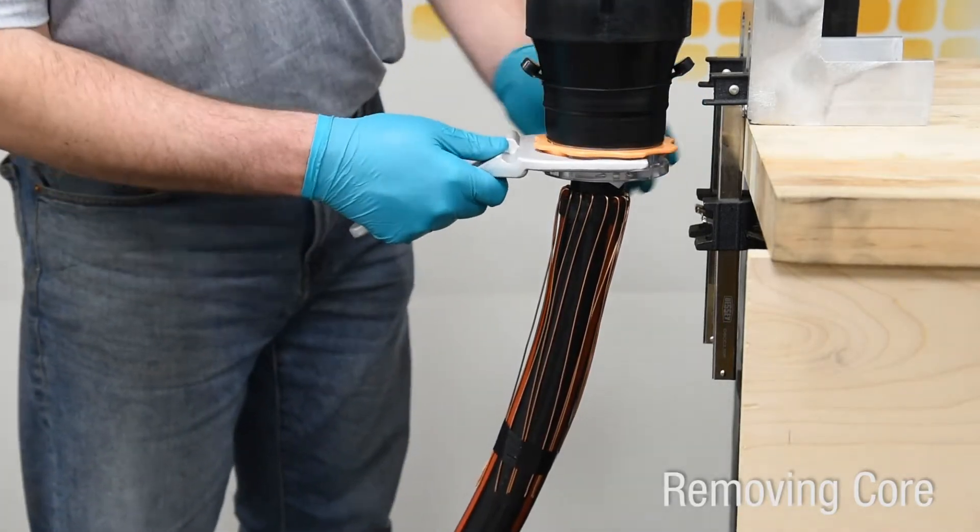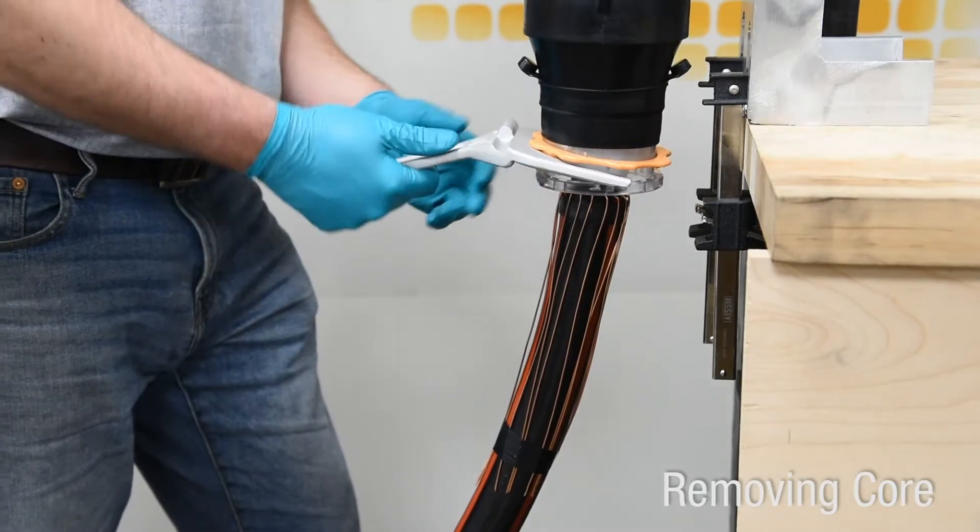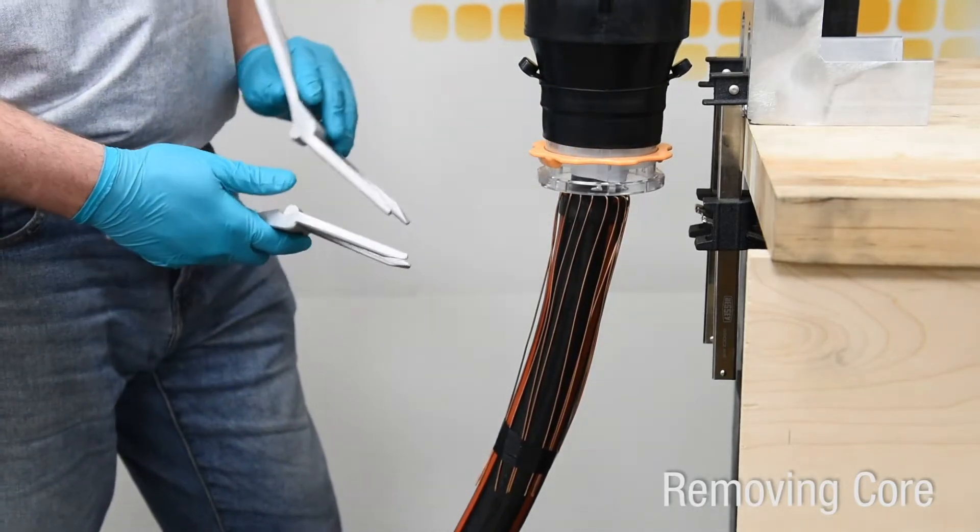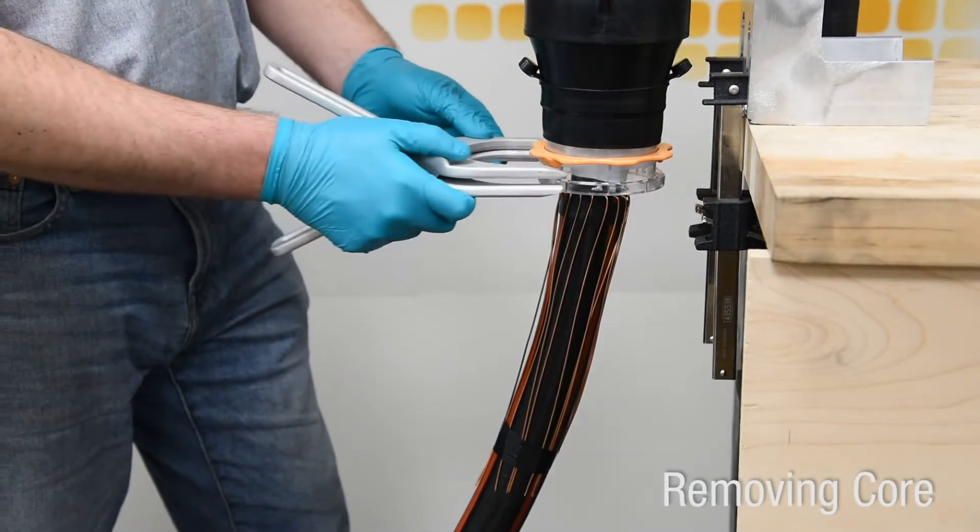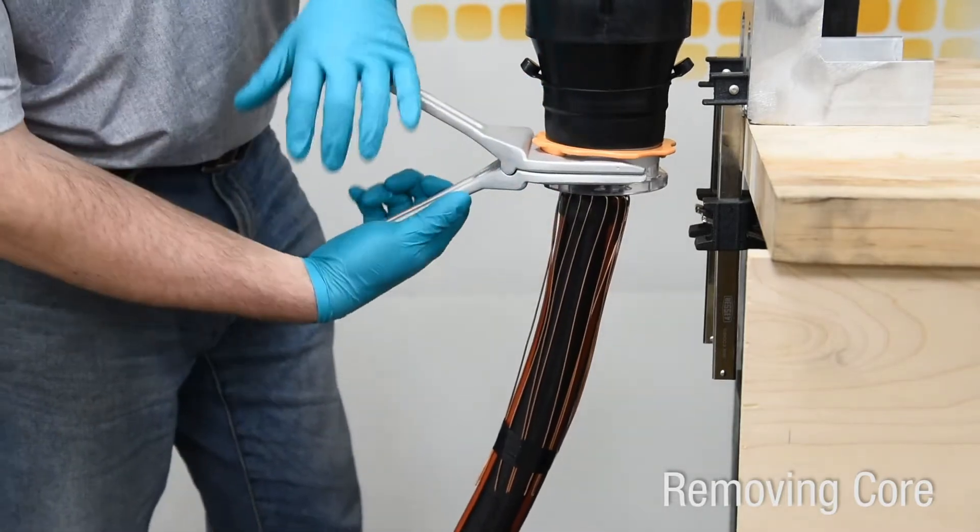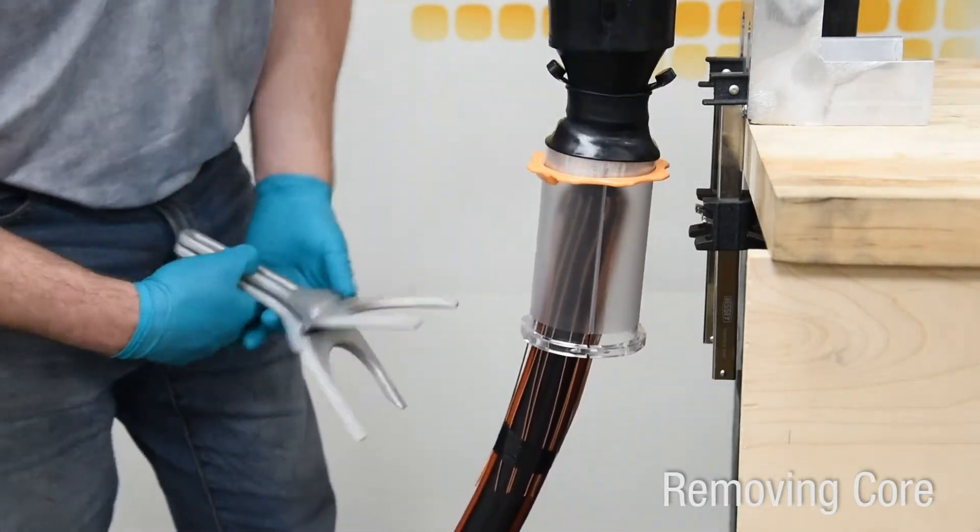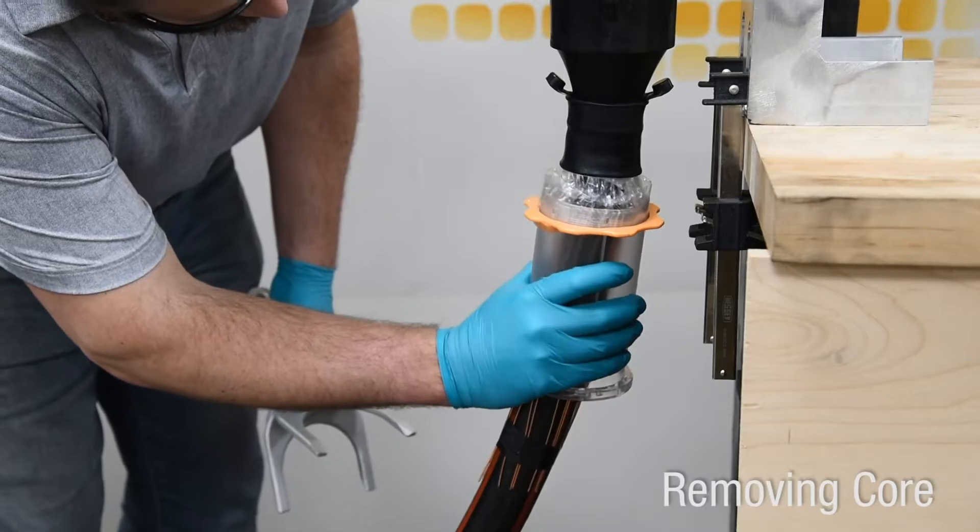Insert one half of the core removal tool and pry slightly to make room for the second half. Insert the second half and bring the handles together to eject the core from the housing.